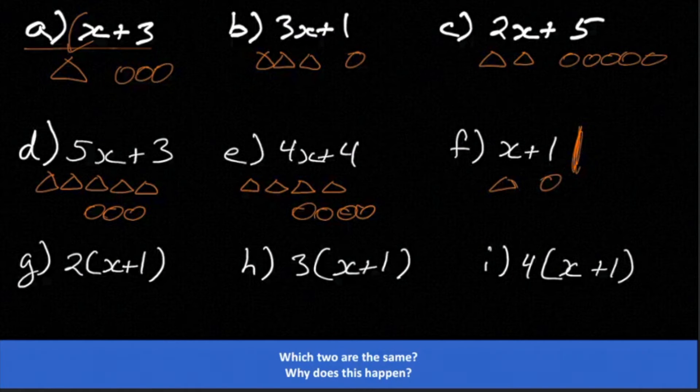So you notice for B there's 3x, so there's three triangles, there's one circle. For C there's 2x, so there's two triangles and there's five circles. Okay, so just pause the video, look, make sure you've got this correct.